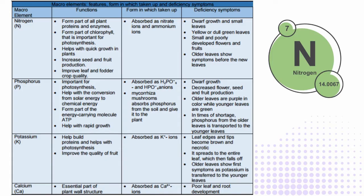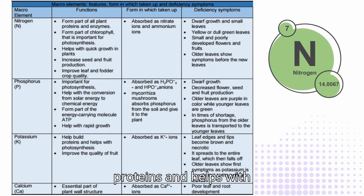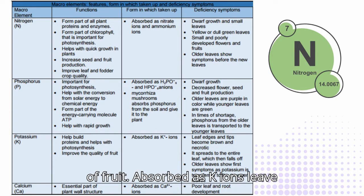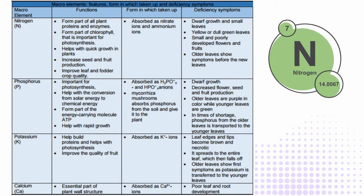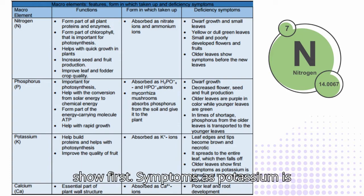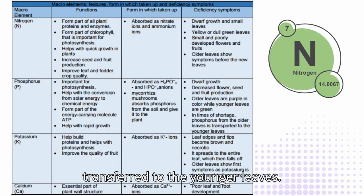Potassium (K): Helps build proteins and assists with photosynthesis, and improves the quality of fruit. Absorbed as K⁺ ions. Deficiency symptoms: leaf edges and tips become brown and necrotic, spreading to the entire leaf which then falls off. Older leaves show symptoms first as potassium is transferred to the younger leaves.